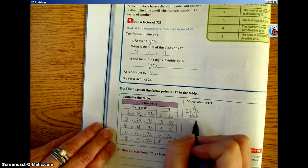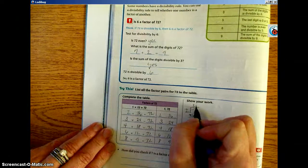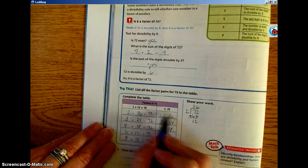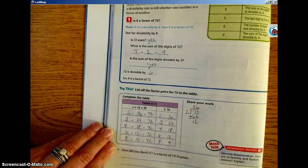I know that 2 goes into 12, 6 times. So 2 times 36 is 72. My factor pair is the two numbers that you multiply together.